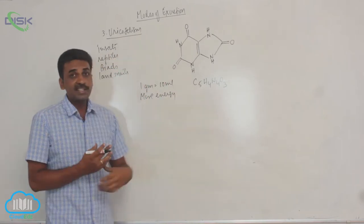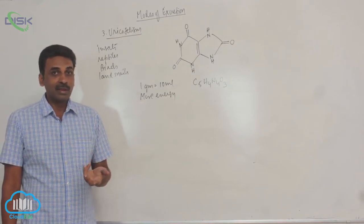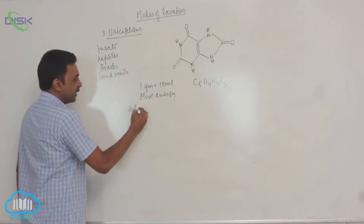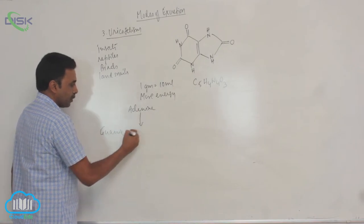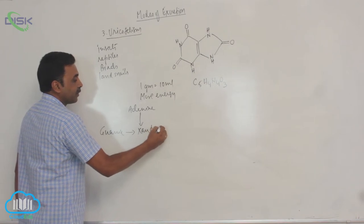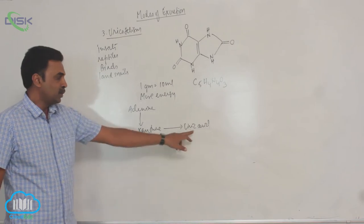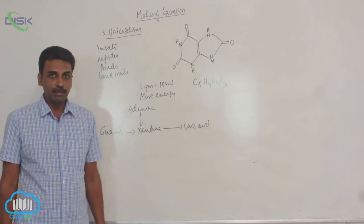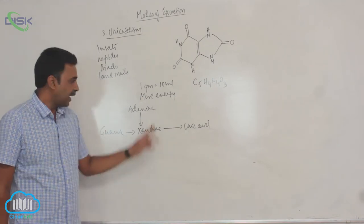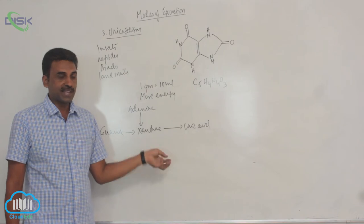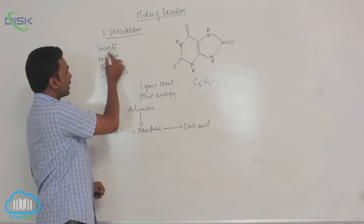Uric acid is also synthesized in case of mammals from nitrogen bases, adenine, guanine. They produce xanthine. And from xanthine uric acid is produced. Uric acid is synthesized in mammals by metabolism of nucleic acids. Adenine, guanine is converted into xanthine. That is converted into uric acid. In reptiles and birds.